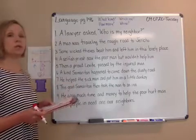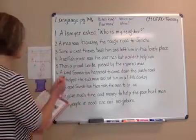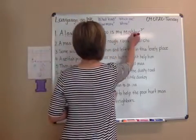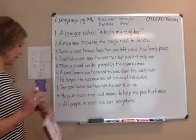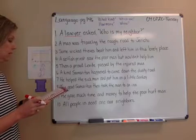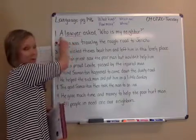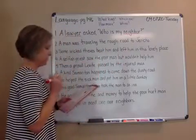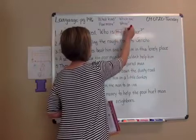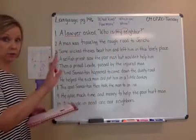Number one: a lawyer asked, 'Who is my neighbor?' Let's pick up nouns first — lawyer and neighbor. Now go back and pick up adjectives. Is 'my' an adjective? Yes, because it shows whose. Circle and match it to neighbor. Is 'is' an adjective? No — so we're finished. You stop there.